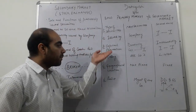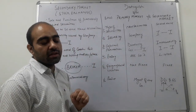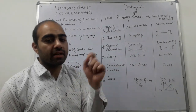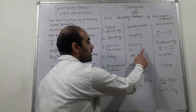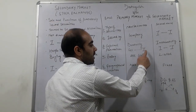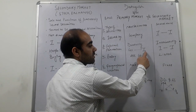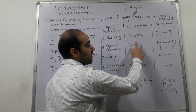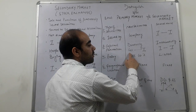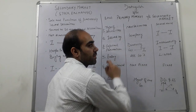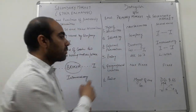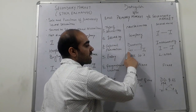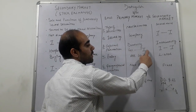The third point is capital formation. In the primary market, capital formation happens directly, because the investor purchases securities and the cash is transferred directly to the company, contributing to the company's capital formation. If the company grows and expands, the capital will increase. But in the secondary market, the company's role is not played.